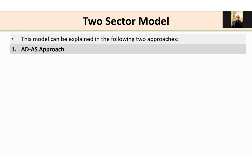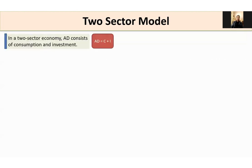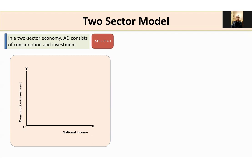Let's begin with the aggregate demand and aggregate supply approach. In a two-sector economy, aggregate demand consists of consumption and investment — that is, aggregate demand equals C plus I. Now look at the figure.